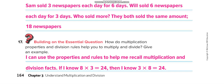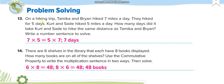On a hiking trip, Tamika and Brian hiked 7 miles a day for 5 days — that's 7 times 5. Now using the commutative property: Kurt and Sehri hiked 5 miles a day. To cover the same distance as Tamika and Brian, we switch the factors — 5 times 7 equals 35. So Kurt and Sehri hiked for 7 days. Both 7 times 5 and 5 times 7 equal 35.